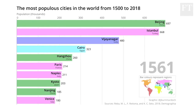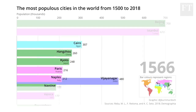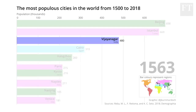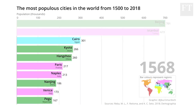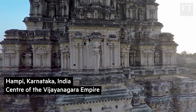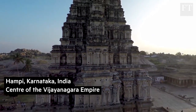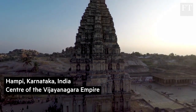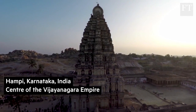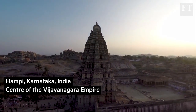The eagle-eyed among you may have noted one city vanish, dropping from second or third in the top 10 right out of the series altogether. That was in 1565 when the Indian city of Vijayanagar was conquered in a military conquest and then procedurally burned to the ground over a period of months. Pretty much nothing was left, and today only ruins survive.